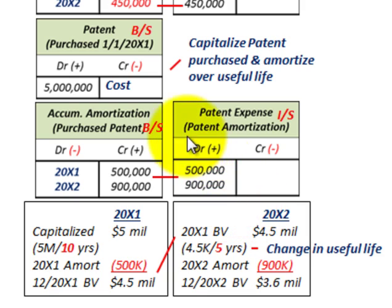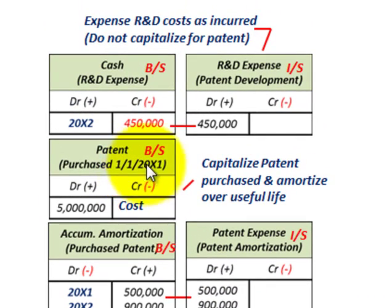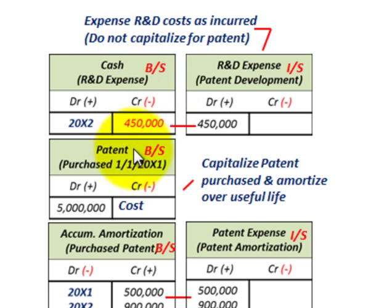That takes care of our purchased patent and how you would account for it. Remember: R&D costs are separated from the capitalized costs that are amortized.